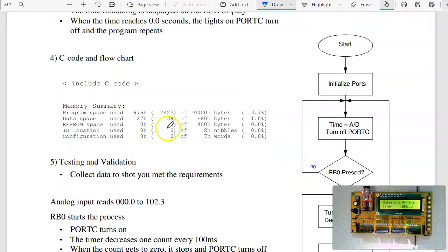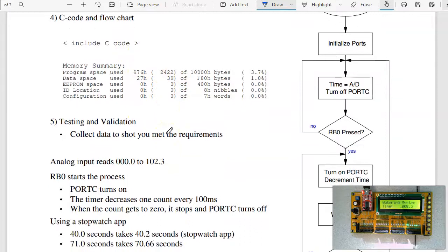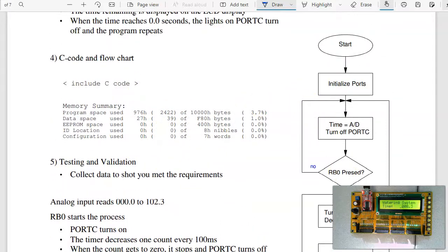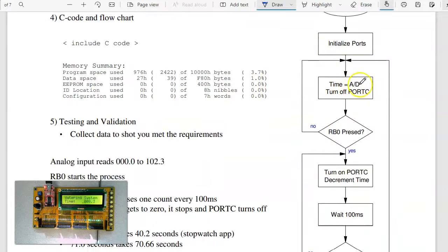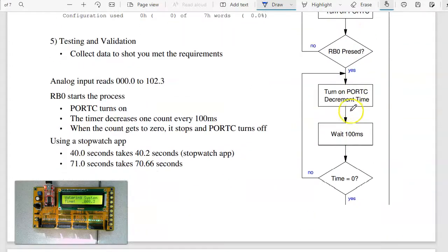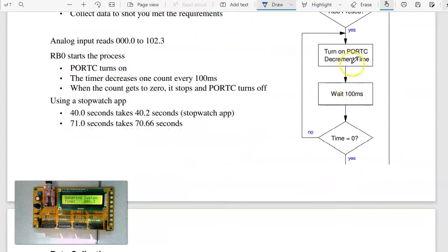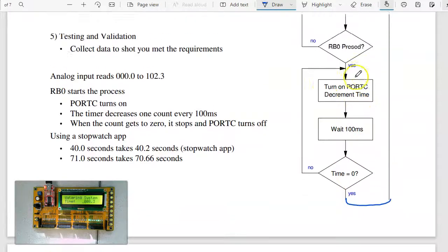So here's the C code. I'll kind of leave for you to write yourself. Here's a flowchart. I'm going to initialize the analog input. Each time I loop, I'm going to read the analog input, saving that as time with turning off port C. Soon as I hit RB0, I break out of that loop, go down here. I'll turn on the lights on port C, decrement time, wait 100 milliseconds, repeat until I get to 0. Once I get to 0, I then come back out and repeat.